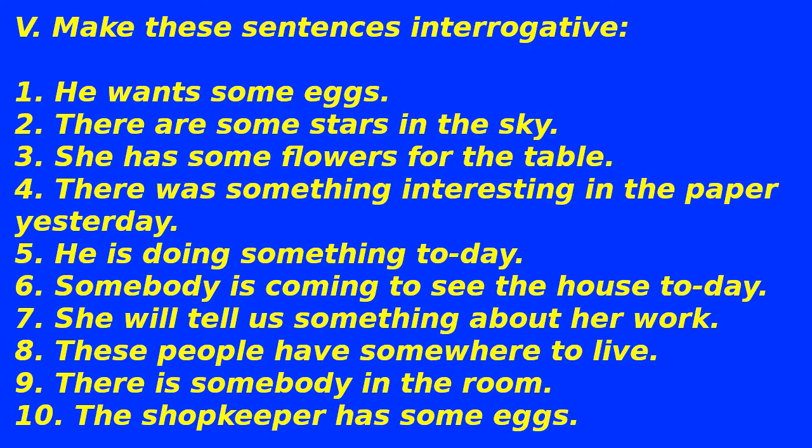Exercise 5: Make these sentences interrogative. 1. He wants some eggs. 2. There are some stars in the sky. 3. She has some flowers for the table. 4. There was something interesting in the paper yesterday. 5. He is doing something today. 6. Somebody is coming to see the house today. 7. She will tell us something about her work. 8. These people have somewhere to live. 9. There is somebody in the room. 10. The shopkeeper has some eggs.